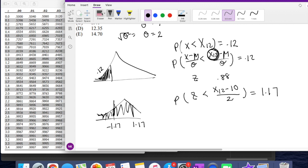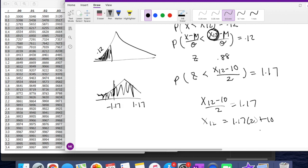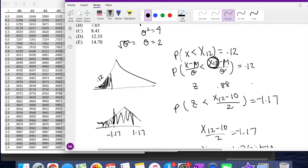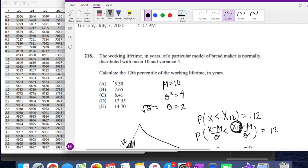So now we already have everything we need. So now we have x12th minus 10 over 2 is equal to 1.17. So we can just solve for x12th with basic algebra, 1.17 times 2 plus 10. But again, remember, this is negative. So that's negative 1.17 times 2 plus 10, which is equal to 7.66, which is your answer B.